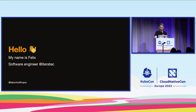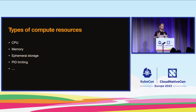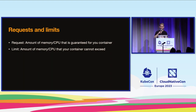When we talk about resources in Kubernetes, we're obviously talking about compute resources — CPU and memory are the obvious ones, though there are many more like ephemeral storage and PID limiting. For this talk I'll concentrate on CPU and memory. The documentation tells us how to set requests and limits: requests are the amount of memory and CPU guaranteed for our containers, and limits are the amount that our containers cannot exceed.